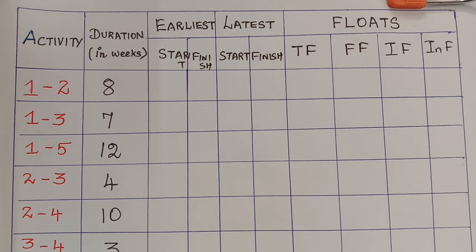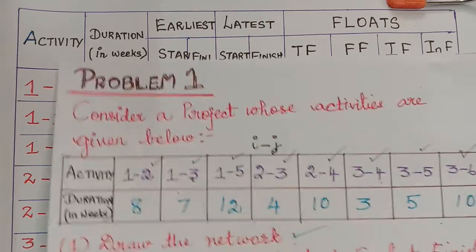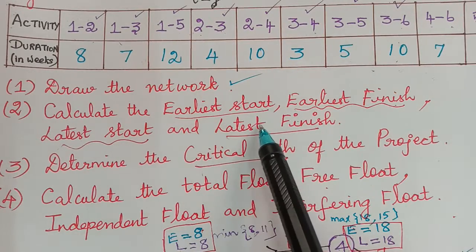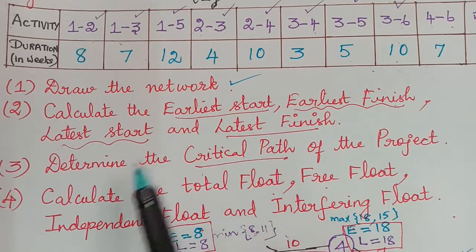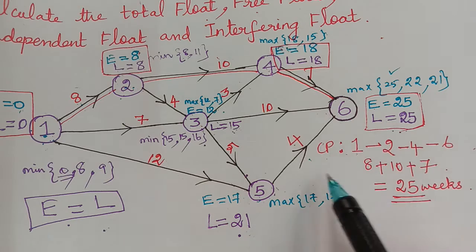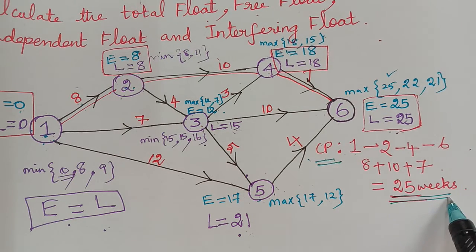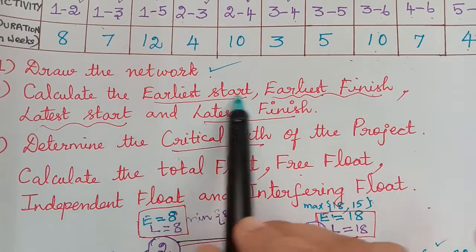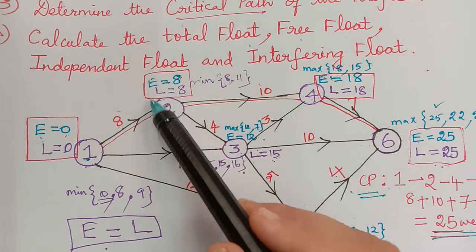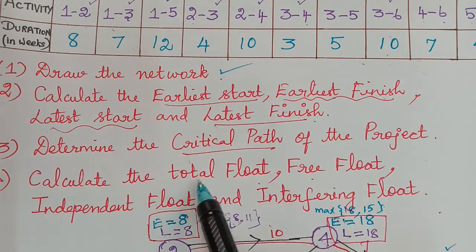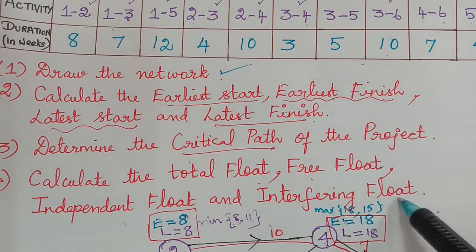Hello students. This is a continuation of our previous lecture on scheduling PERT and CPM. We were dealing with a problem where we considered a project whose activities were given, and we were asked to draw the network, then calculate the earliest start, earliest finish, latest start, latest finish, the critical path, and all the floats — total float, free float, independent float, and interfering float.